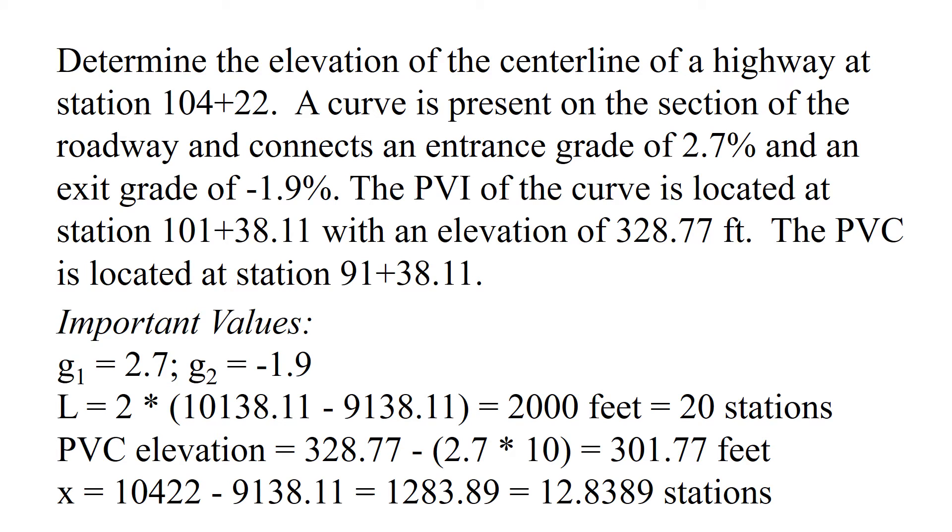G2 is -1.9, and the length is two times the distance from the PVI to the PVC. We're given the station of the PVI and the station of the PVC, so we take that difference and multiply by two to get a length of 2,000 feet or 20 stations.